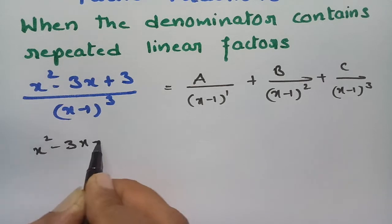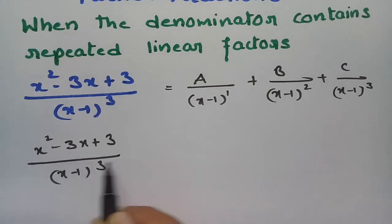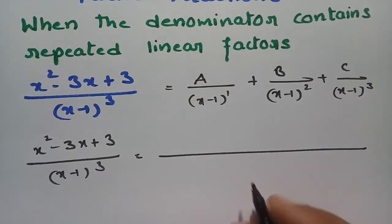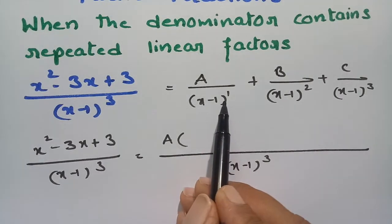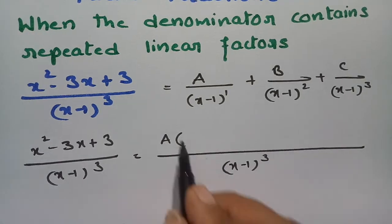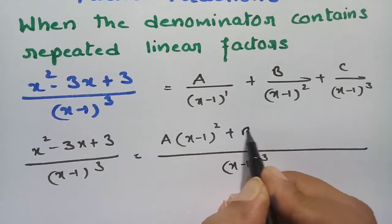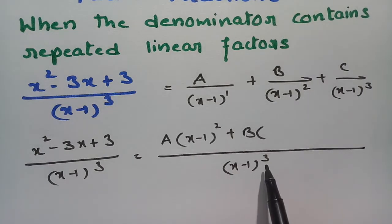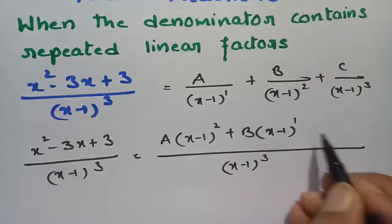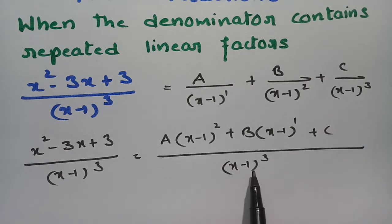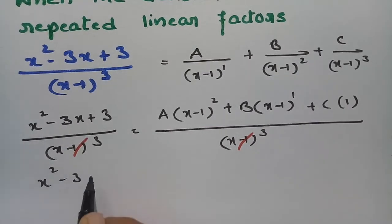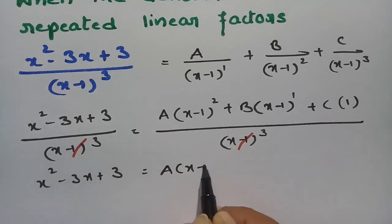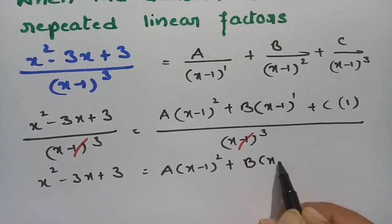So here (x²-3x+3)/(x-1)³ equals, taking (x-1)³ as LCM: A·(x-1)² plus B·(x-1) plus C·(x-1)³ divided by (x-1)³. Cancelling (x-1)³ on both sides gives us: x²-3x+3 = A(x-1)² + B(x-1) + C.